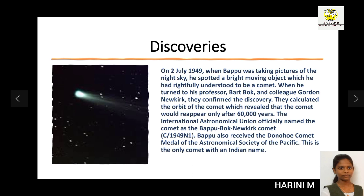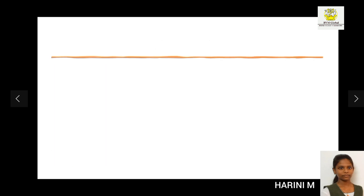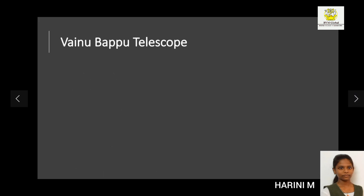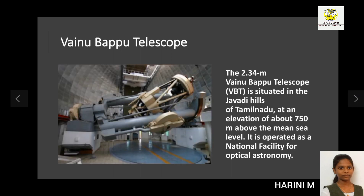The International Astronomical Union officially named the comet the Bappu-Bok-Newkirk comet; it is the only comet with an Indian name. He also received the Donohoe Comet Medal of the Astronomical Society of the Pacific. Vainu Bappu was appointed to head a team of astronomers to build an observatory at Nainital. The Vainu Bappu Observatory is one of the main observatories of the Indian Institute of Astrophysics, and a number of discoveries were made from it. The Vainu Bappu Telescope is situated in the Jawadi Hills of Tamil Nadu and is operated as a national facility of optical astronomy.